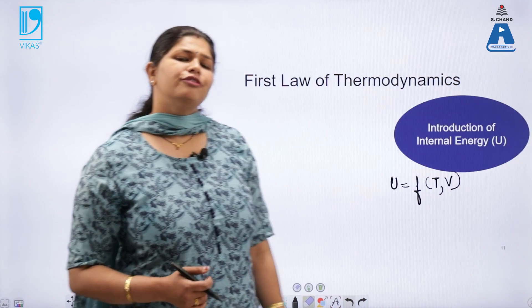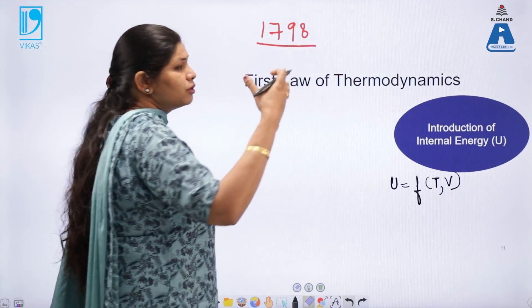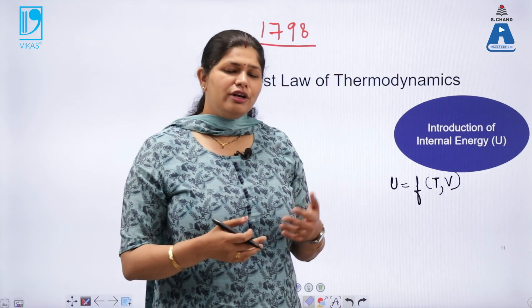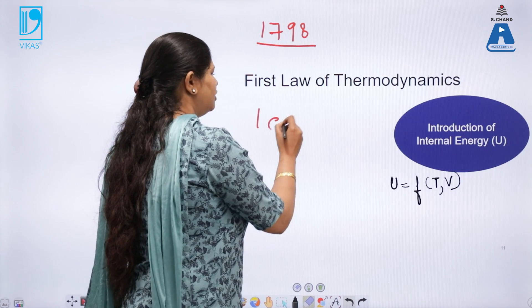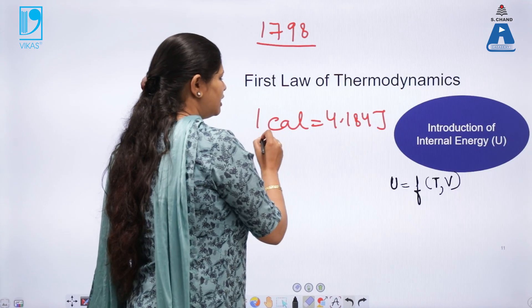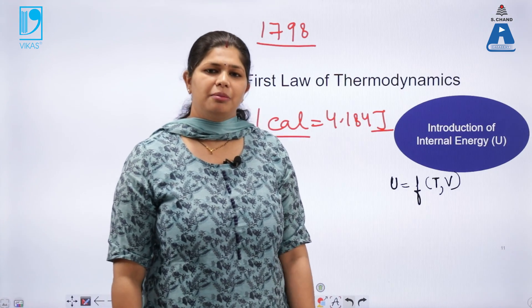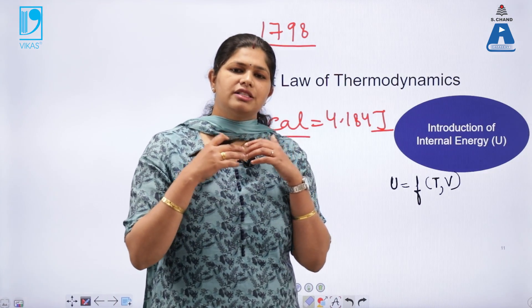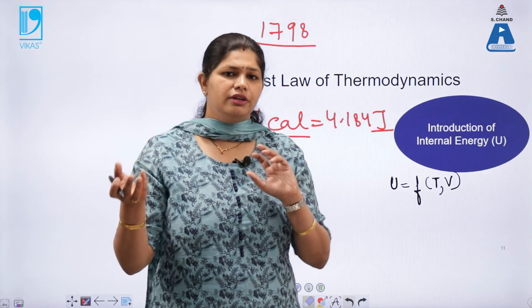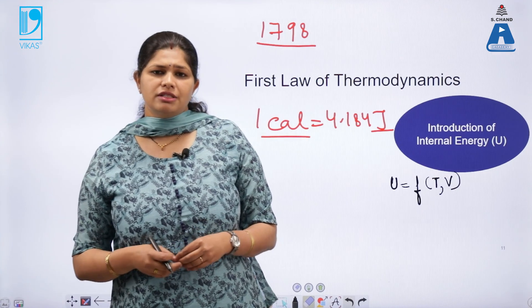First law of thermodynamics. In the year 1798, Benjamin was the first one who introduced, who saw the relation between work and heat. Later on, Joule proposed that one calorie, you are all aware that it is equal to 4.184 Joule, that is relation of heat between heat and work. So, what is first law of thermodynamics? It states that energy of the entire universe is conserved and only the energy can be converted from one form to another form.